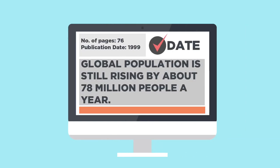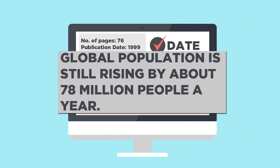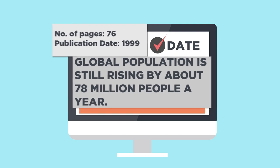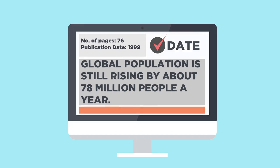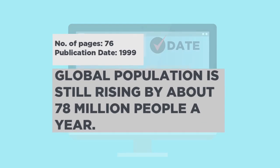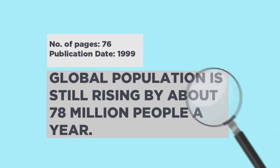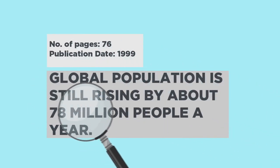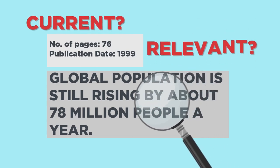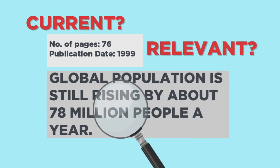Next, check the date. An article that talks about the most populated city in the world might not be reliable if it was published in 1999. A lot has changed since then. Always be sure to check the publish date of a website or article to determine if it's current and relevant for your needs.